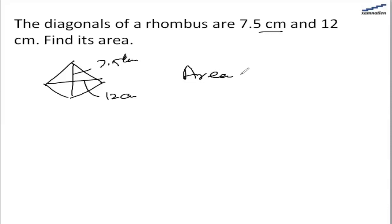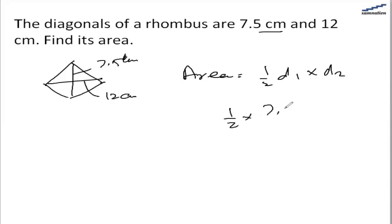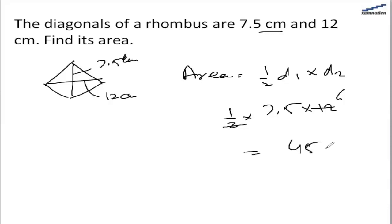The area of the rhombus is half diagonal 1 multiplied by diagonal 2. So, half of 7.5 multiplied by 12, and that is 45 cm squared.